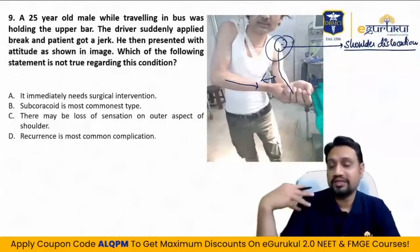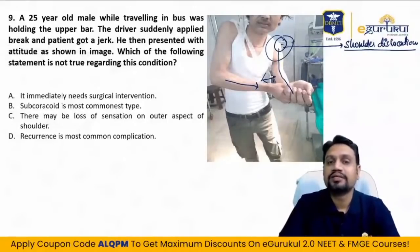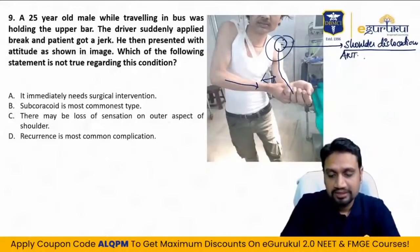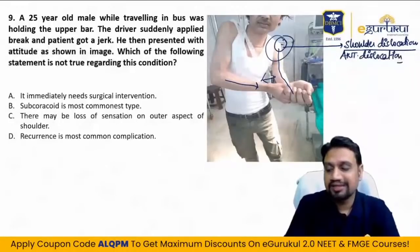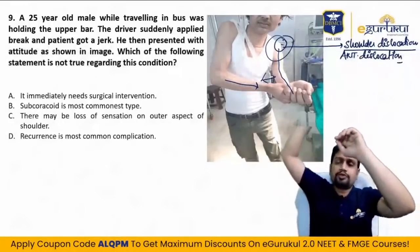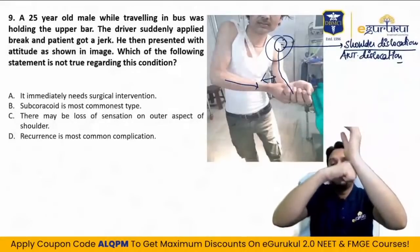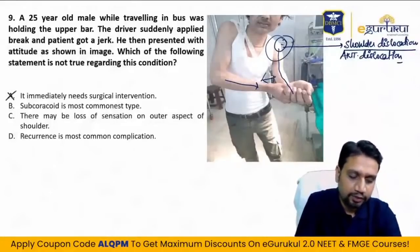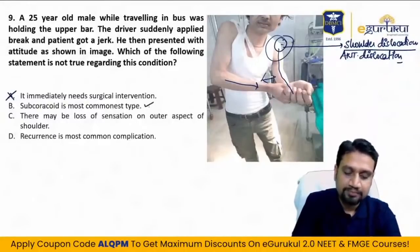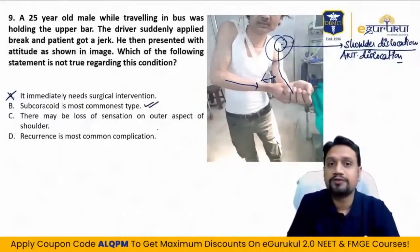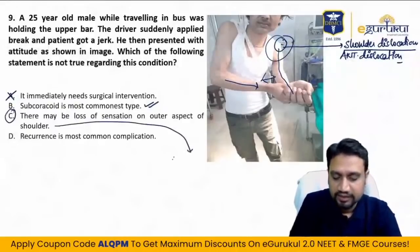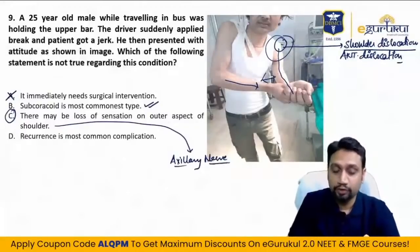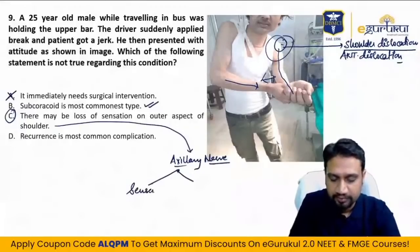In inferior dislocation the head goes below the glenoid and the patient presents with the arm over the head — that's not the case here. This is anterior dislocation. It does not immediately need surgical intervention. Subcoracoid is the most common type of anterior dislocation. There may be loss of sensation over the outer aspect of the shoulder — this signifies involvement of the axillary nerve.